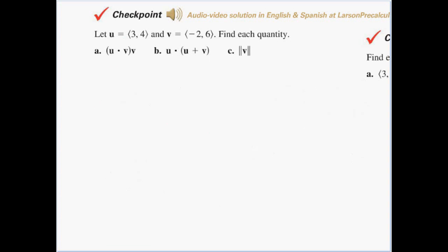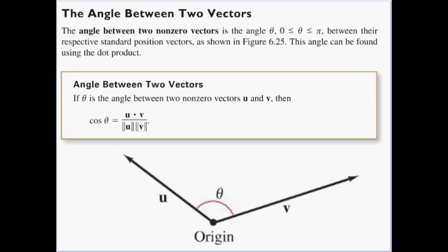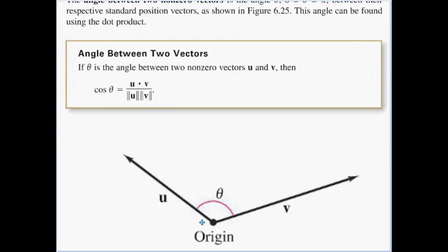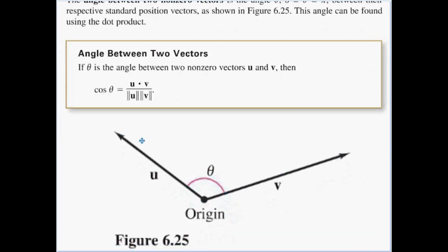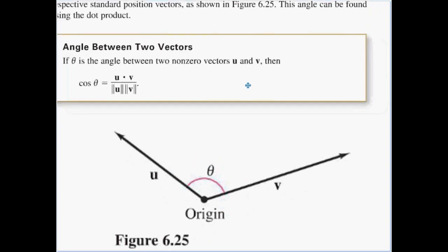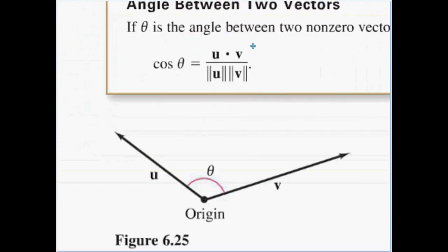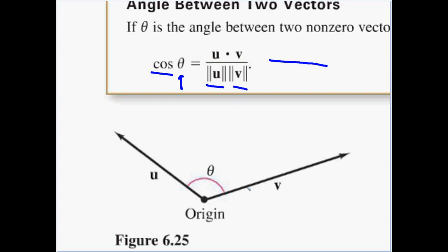Now for the angle between any two vectors. The angle theta between two non-zero vectors is between zero and pi, as shown in the figure. This angle can be found using the formula: cos θ = (u·v) / (|u| × |v|). The numerator is just the dot product, and the denominator is the product of the two magnitudes. To find theta, we take the inverse cosine of both sides.